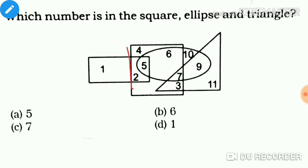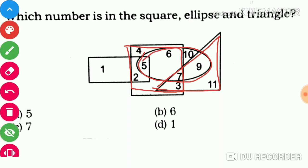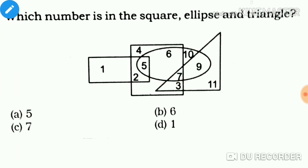Square is square, and this is the triangle. This is the ellipse. A2 is in the square. The square contains four, six, five, two, seven, and three.